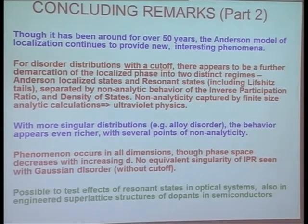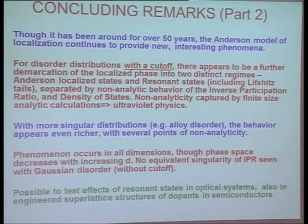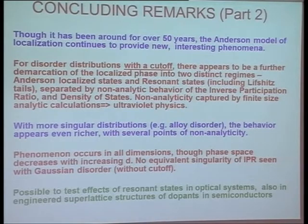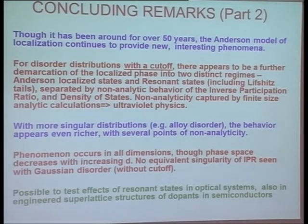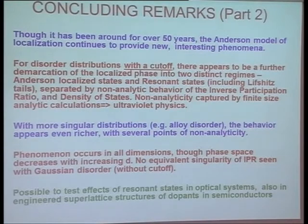One might ask whether bounded disorders make sense. If you ask a chemist, the answer is yes, because these disorder distributions are always coming from clusters of atoms. Any finite cluster of atoms always has a minimum energy — it's not infinity. So Gaussian disorders are figments of physicists pretending to be mathematicians. Real distributions don't look like that at all.